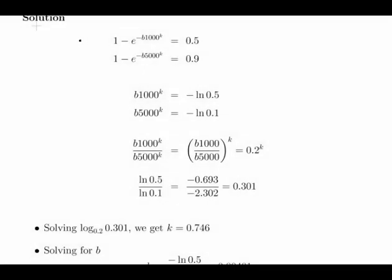So we have the cumulative distribution functions with values 0.5 and 0.9. The median is 1000, so the cumulative distribution function has a value of 0.5—50% is less than the median. So you have 1 minus the exponential of minus b times 1000 to the power of k, and that equals 0.5. The second expression is 1 minus the exponential of minus b times 5000 to the power of k equals 0.9.